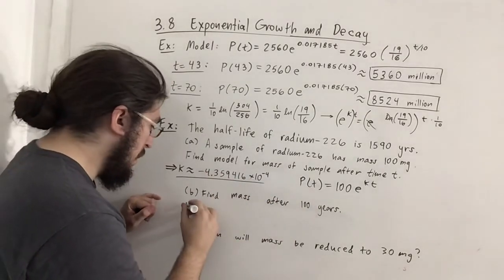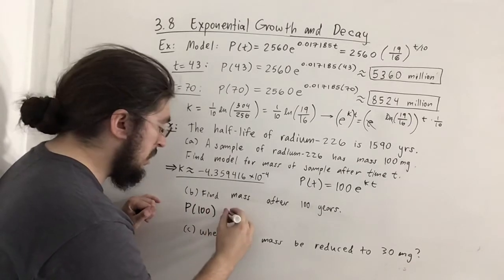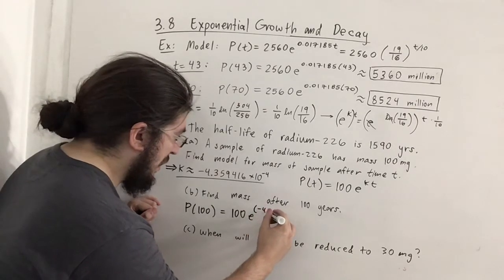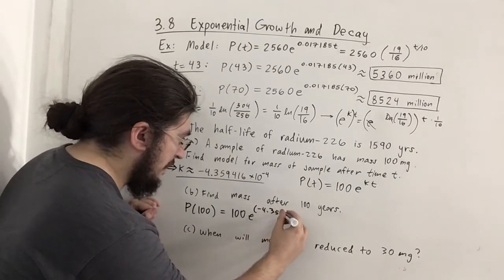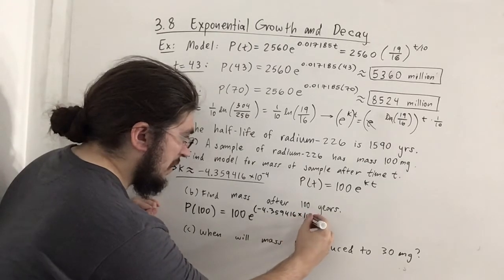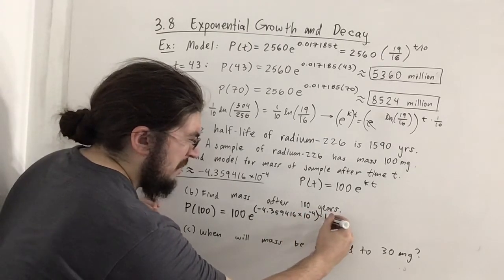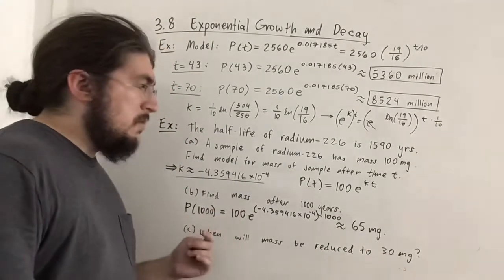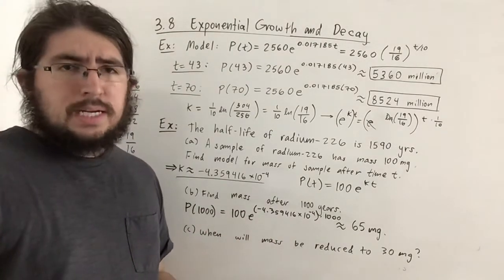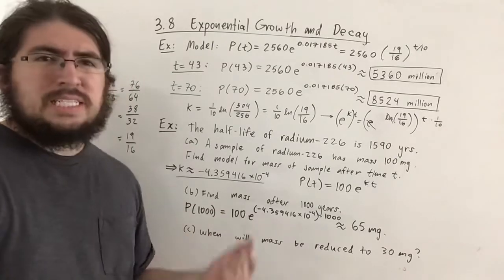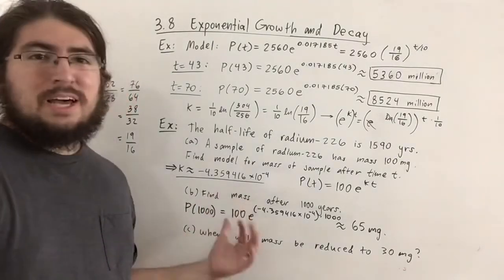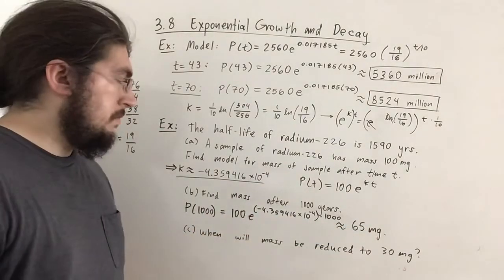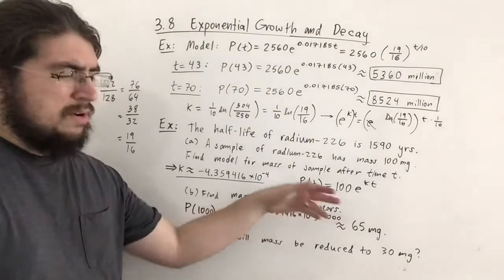For part B, we want P(1000). That's 100·e^(k·1000), where k = -4.359416 × 10⁻⁴. The problem actually said 1000, so after 1000 years you get about 65 milligrams or less. That's rounding up a bit, but that's fine.